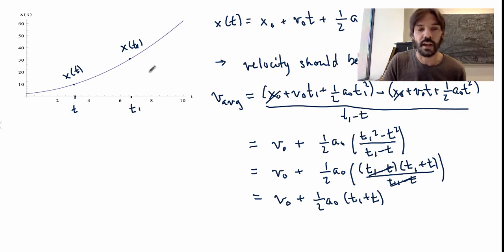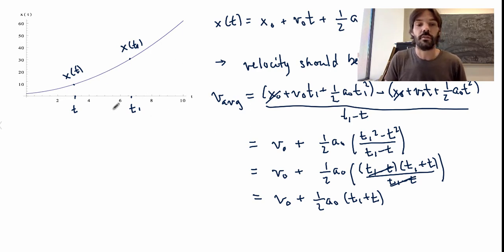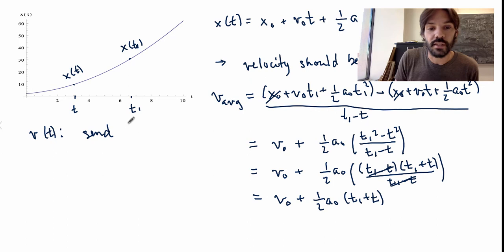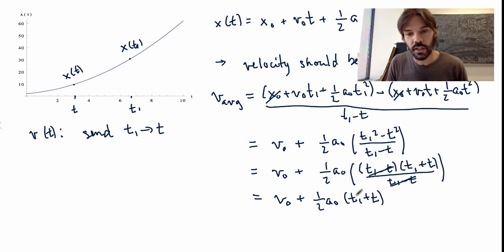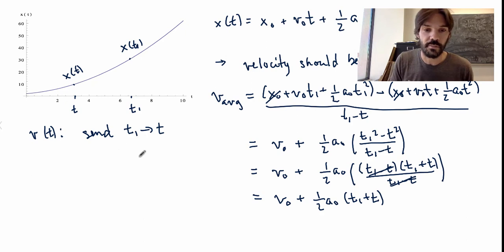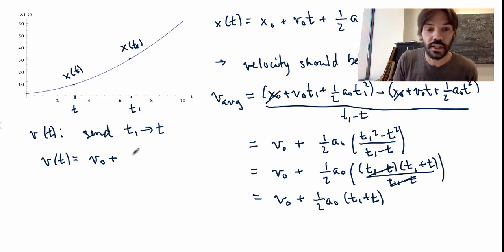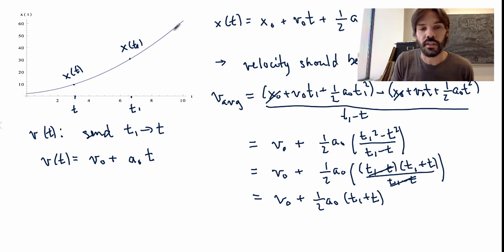If I take a longer time interval, I expect the average velocity to be greater than if I take a very short time interval — the average velocity depends on the time interval chosen because the velocity is not constant. To calculate the instantaneous velocity, I take the limit by sending t1 to be very close to t. Mathematically, that means replacing t1 by t in the equation. I get v0 plus one-half a0 times 2t — the twos cancel — giving v0 plus a0 times t. This is the instantaneous velocity for the motion of this particular object.